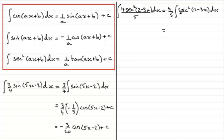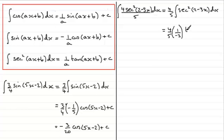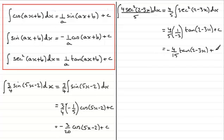So it's four-fifths times this integral. Sec²(2 − 3x) has the form sec²(ax + b), so it's 1 over a times tan(ax + b). The a value is minus 3 and b is 2, giving 1 over minus 3 times tan(2 − 3x) plus c. Tidying this up, we get minus 4 fifteenths of tan(2 − 3x) plus the constant of integration c.